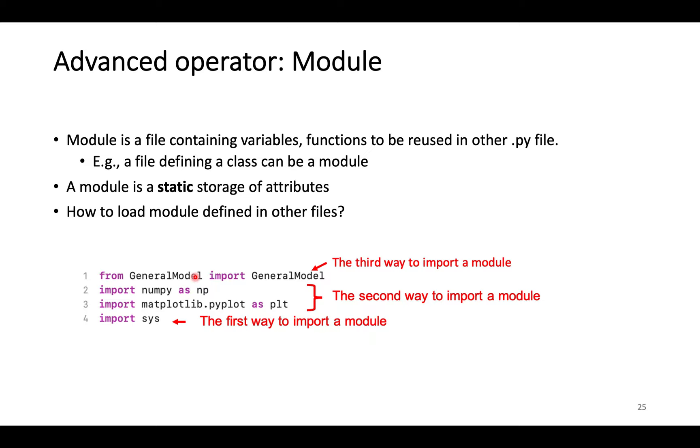One way is to load the module directly with its default name. Later, we can retrieve its functions or variables inside the module by its default name. The other way is to load the module and assign a new name to it. In this case, we name the NumPy module with a new name np. The third way is to specify what should be imported. This way avoids importing everything inside the module and saves computer memory in the runtime.